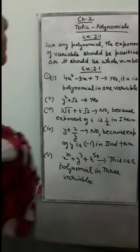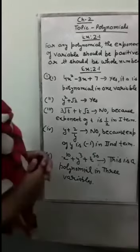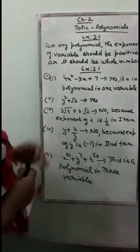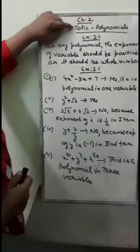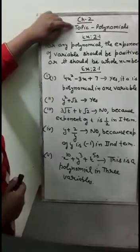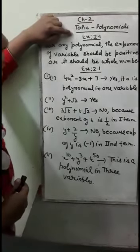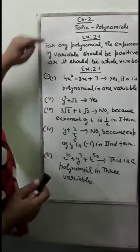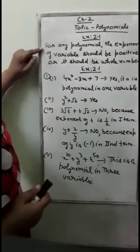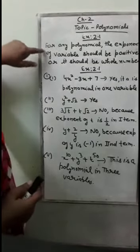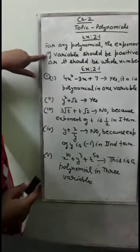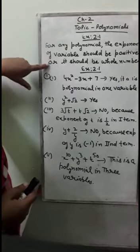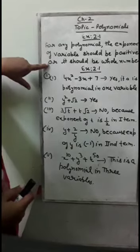Today we are going to discuss chapter 2, Polynomials, Exercise 2.1. For any polynomial, the exponent of the variable should be positive, or it should be a whole number.